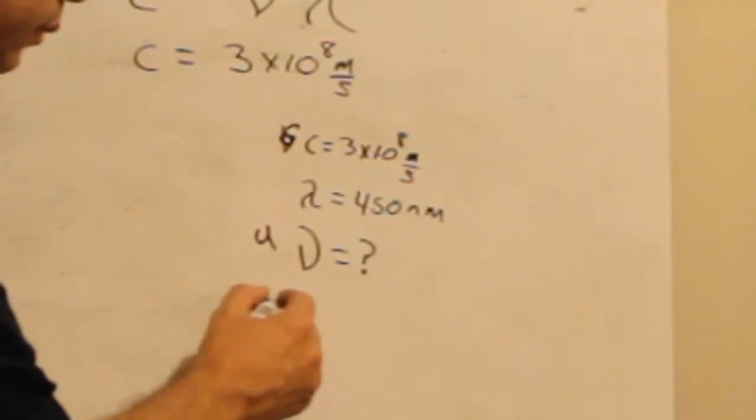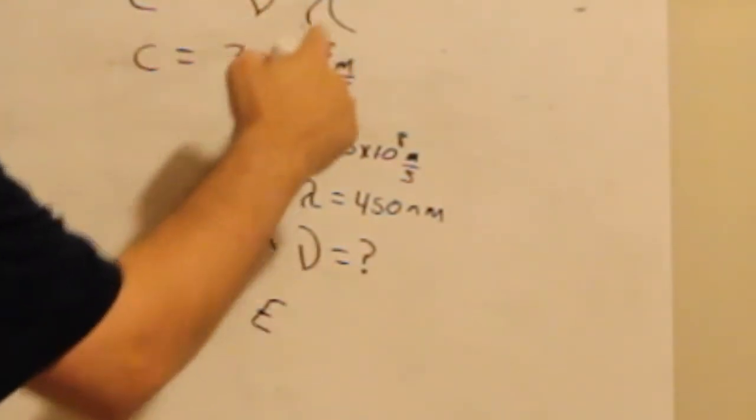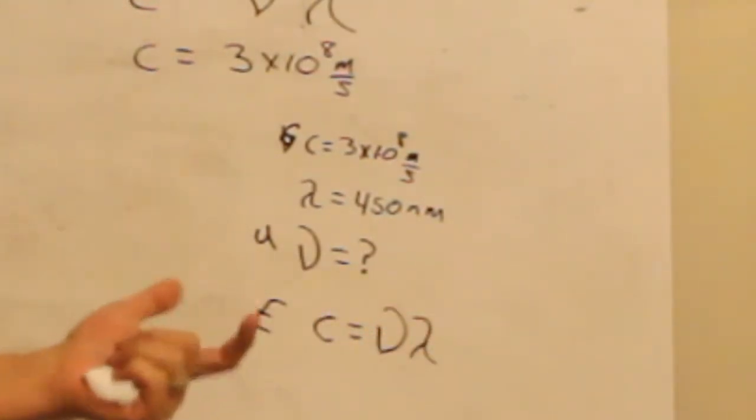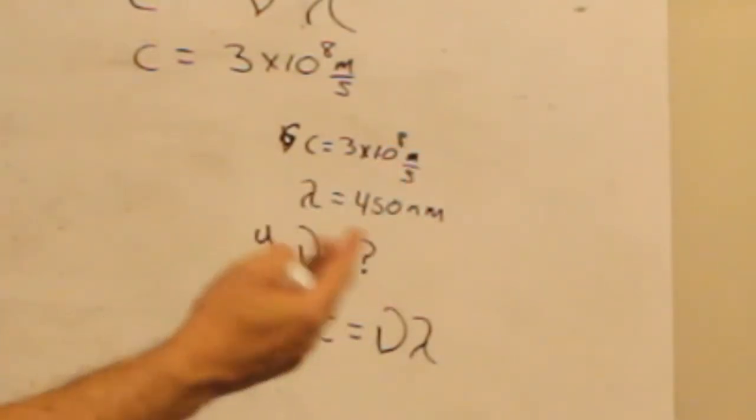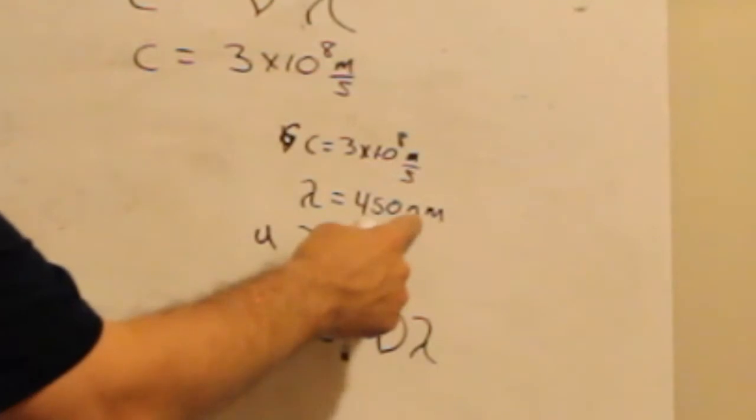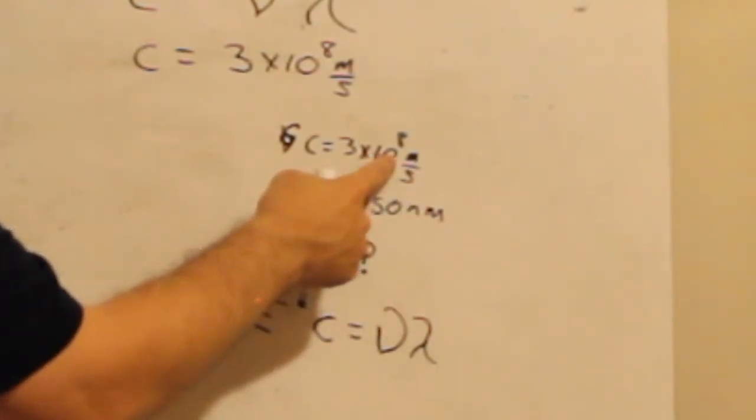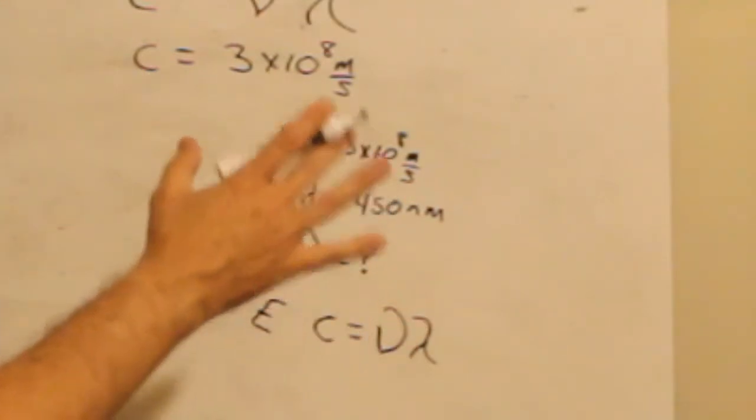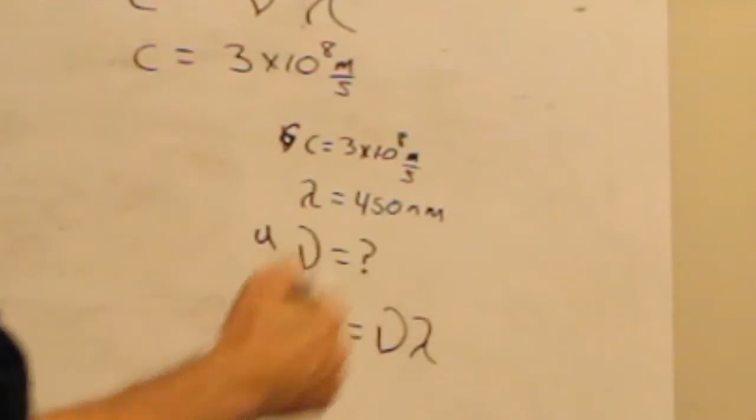And our equation, well, we only have this one right now for light. C equals frequency times wavelength. But on a bigger test where we've done density, and we're going to do this equation, and we're going to have another equation, you're going to have to make sure we're picking the correct one. Now, before I go plugging any numbers in, the first thing you need to do - this is nanometers, and this is in what? It's in meters. They have to be the same. So, we're going to have to convert one of them.